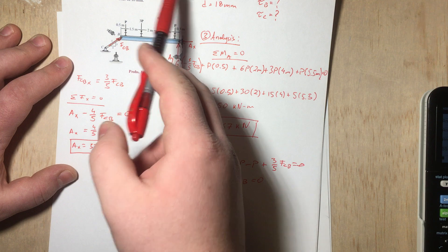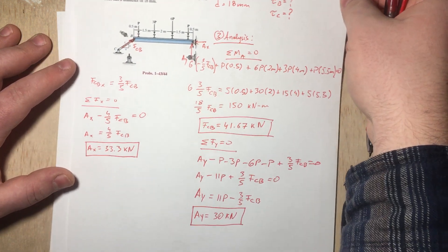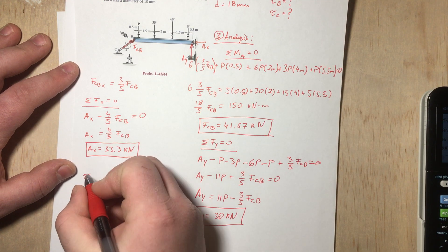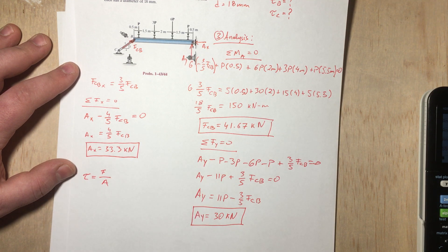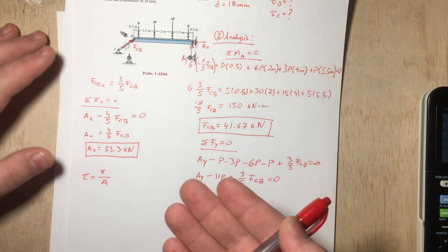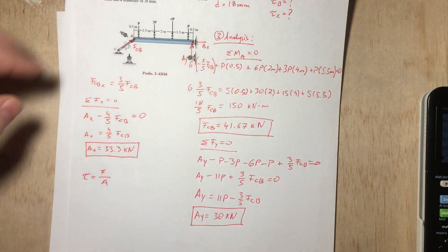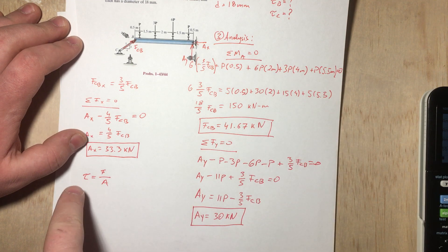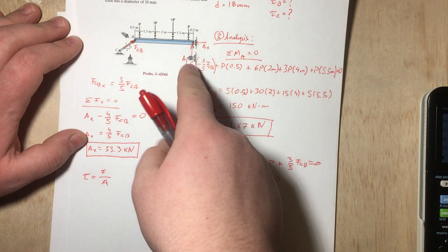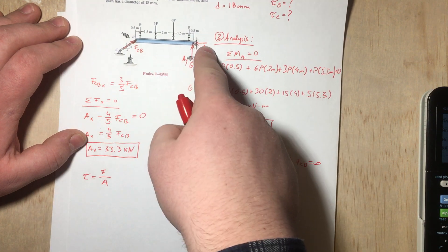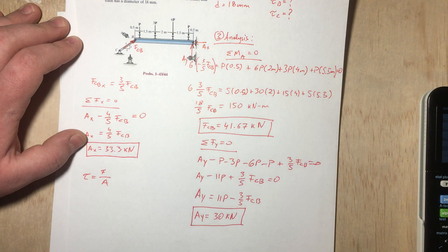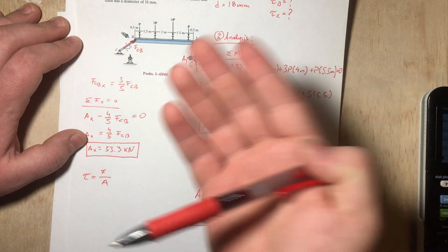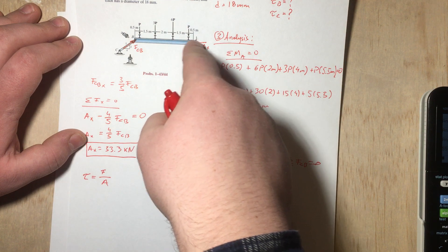Now that we have all reaction forces, we can determine the average shear stress. Remember, shear stress equals the parallel force divided by the area — it's like pressure, but the force is parallel to the cross-sectional area rather than perpendicular. To find shear at point A, we need the magnitude of the resultant force at A, since both AX and AY are parallel to the pin's cross-sectional area.